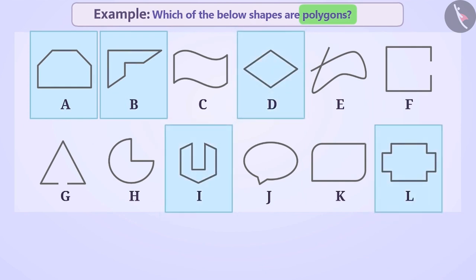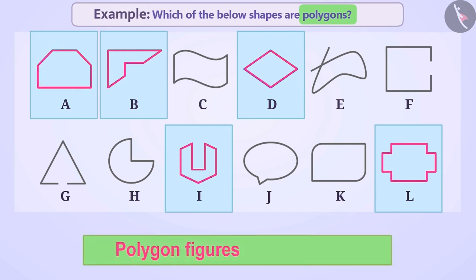If we observe A, B, D, I and L, then these are made of line segments and are closed figures. Therefore, in the given figures, figures A, B, D, I and L are polygons.